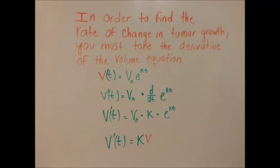In order to find the rate of change in tumor growth, you must take the derivative of the volume equation. V prime of t is equal to V naught times the derivative with respect to t times e to the kt. We only find the derivative of e to the kt because V naught is a constant and gets moved to the front.